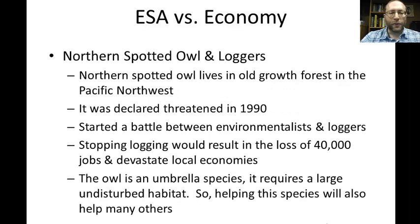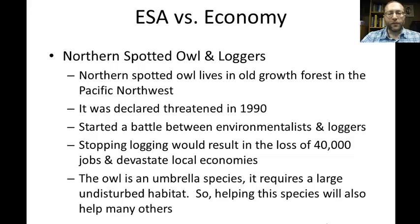Another nationally prominent case was the Northern Spotted Owl, which lives in old-growth forest in the Pacific Northwest. It was declared threatened in 1990, starting a battle between environmentalists and loggers. Once it was declared threatened, logging in areas where the spotted owl lived would have to stop because it would destroy the owl's habitat. Loggers argued this could destroy 40,000 jobs and devastate local economies. Environmentalists wanted to save the spotted owl especially because it is an umbrella species — one that requires a large undisturbed habitat — meaning that by protecting it, many other species are helped too.